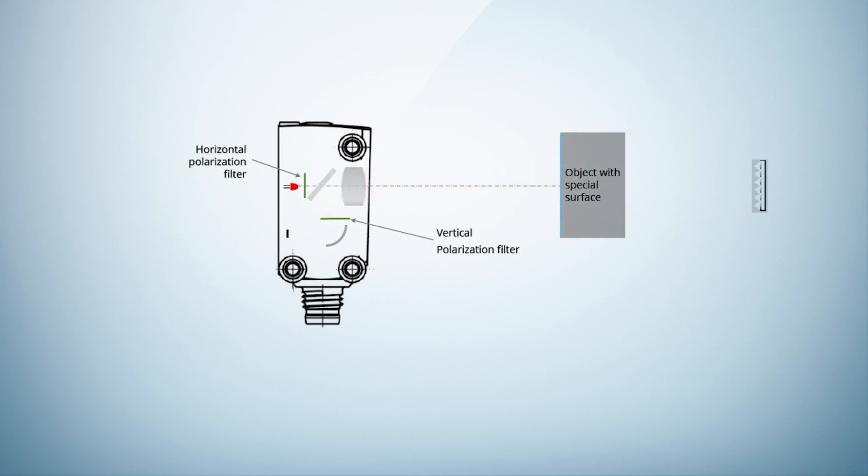Now an object with a special surface is in the beam path. Special means that the surface rotates the light like the reflector does. This effect can be created by surfaces laminated with foils, as they are more and more found on packaging.